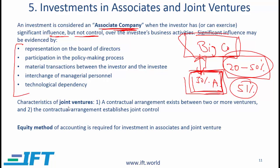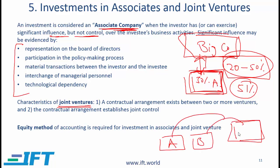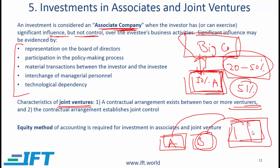Another categorization is joint ventures. This is where two companies — say A and B — jointly run a certain operation. For example, A is a company based in another country that comes to India and sets up a joint venture with company B, which is based in India. With a joint venture, there is a contractual agreement between two or more parties, and each party is referred to as a venturer. The contractual arrangement establishes joint control of the entity which is created.